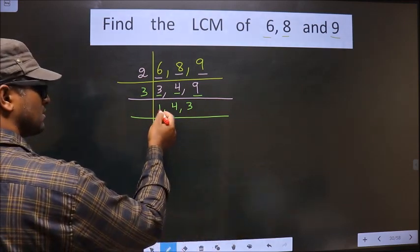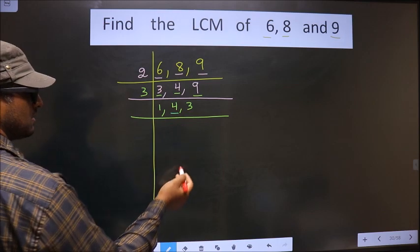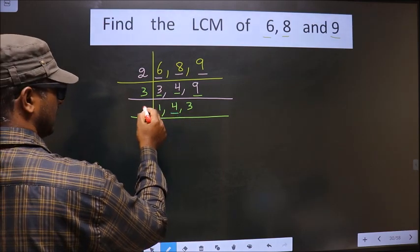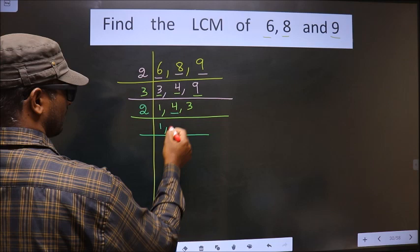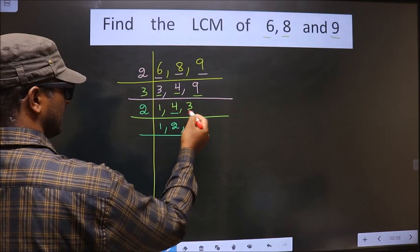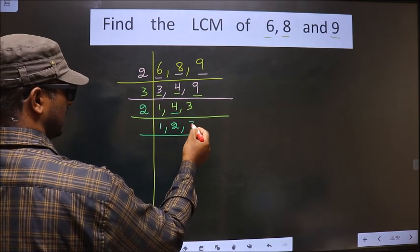Now here we got 1 so focus on the next number that is 4. 4 is an even number so I take 2 here. 2, 2 is 4. 3 is not divisible by 2 so 3 as it is.